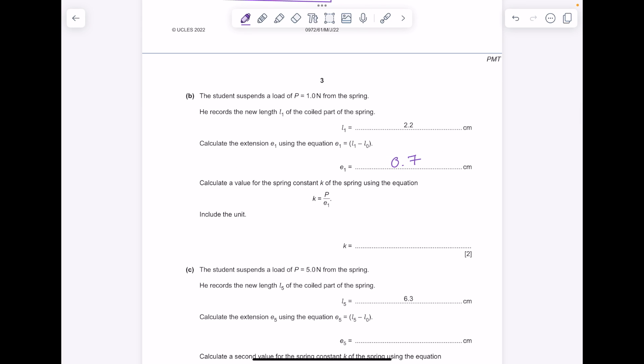Calculate a value for the spring constant K using the following equation. So P was 1 newton, E1 was 0.7. It says to include the unit, so your answer here is 1.43 newtons per centimeter.